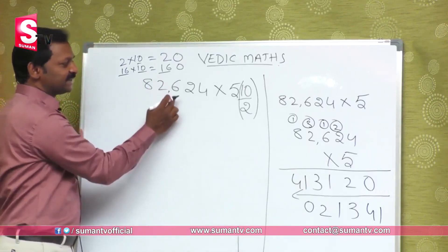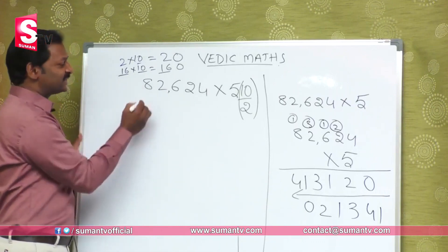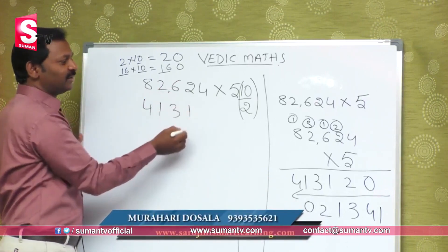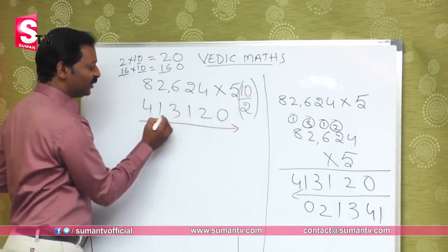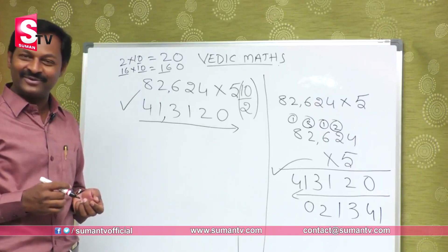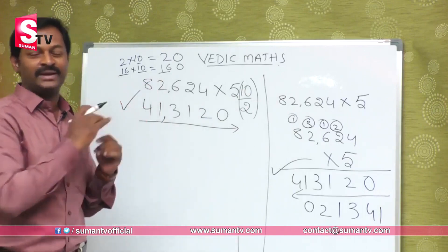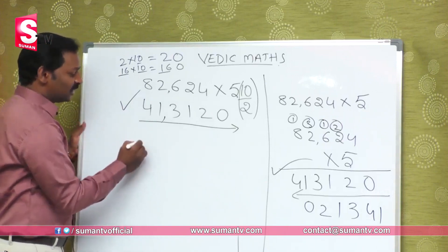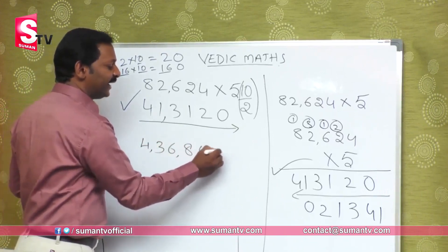Number 82,624. Let's see how it is. Number 8 divided by 2 is 4. Number 2 divided by 2 is 1. Number 6 divided by 2 is 3. Number 2 divided by 2 is 1. So, I will give you one more example. Suppose 4,36,848 multiplied by 5.